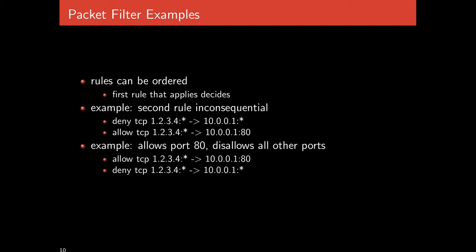In the second example, if we allow port 80 first and then have a deny-all-ports rule with an asterisk, port 80 is still allowed because the explicit rule for port 80 appears earlier and applies first. This effectively allows port 80 and disallows all other ports — port 80 is excluded from the blanket deny because there's an explicit earlier rule permitting it.